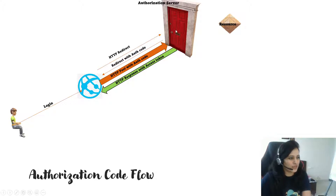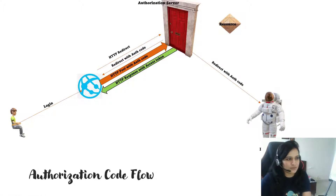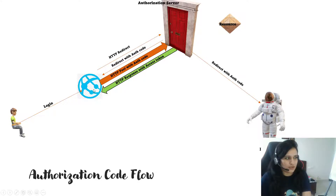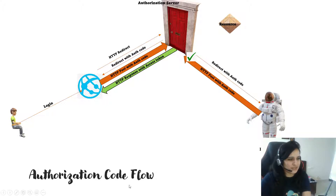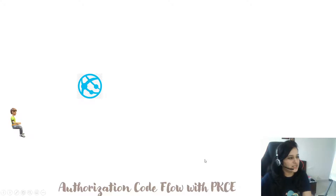This looks fine until a hacker comes in. The hacker somehow manages to get the authorization code that was intended for the application. The hacker then sends that code to the authorization server, which validates it and issues an access token. This is how the basic auth code flow is unsecured.